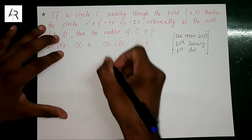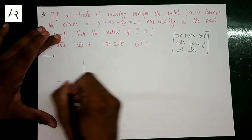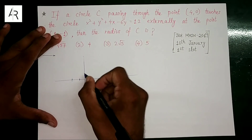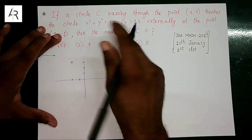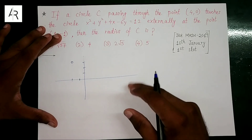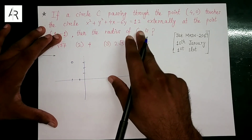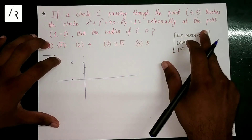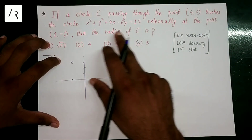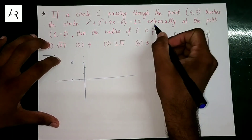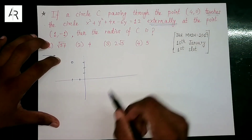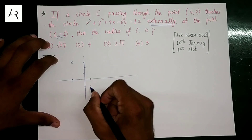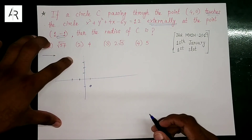Now make a diagram. What is the figure? The center of the given circle is (−2, 3) and the radius is 5. Calculate: root of G² + F² − C = root of 25 = 5. This circle cannot be touched internally — it is touched externally. The point of external touch is (1, −1). That means the point (1, −1) is the point through which the new circle C will pass.